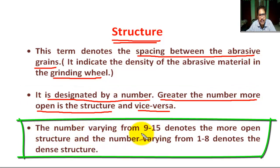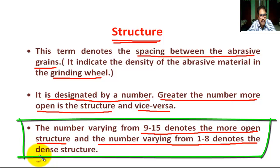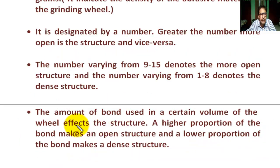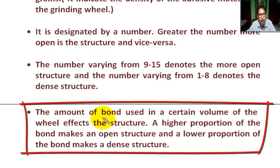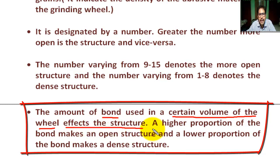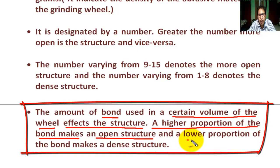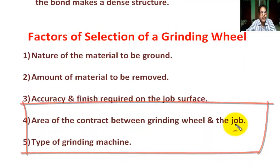The number varying from 9 to 15 denotes the more open structure, and the number varying from 1 to 8 denotes the dense structure. The amount of bond used in a certain volume of the wheel affects the structure - a higher proportion of bond makes an open structure and a lower proportion of bond makes a dense structure.